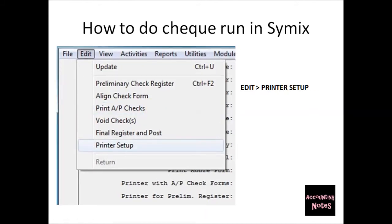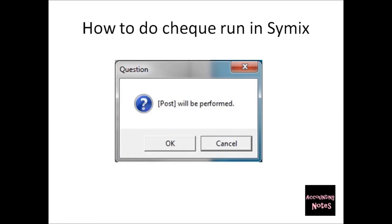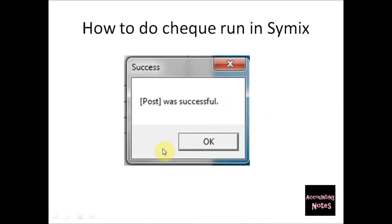Next, go to Edit on the toolbar and choose Print AP Checks. Once the checks have been physically printed, go to Edit again, click Printer Setup, and change the printer back to the normal printer used for reports. You will then receive a printout confirmation showing that the register and checks have been posted in the system. Click OK — a post will be performed — and then a pop-up will say Post Was Successful. Click OK.